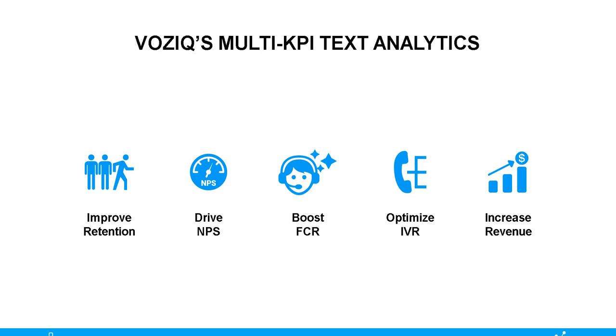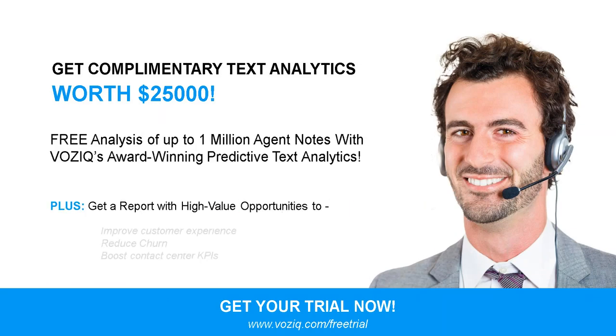It can also help improve first call resolution rates and reduce repeat calls, which cuts cost. Because this data can be delivered immediately to IVRs, you can optimize IVRs and reduce cost further. And the opposite of reducing churn — you can twist this into predicting likely sales and improve sales rates too. Whatever your problem — customer retention, customer experience, cost reduction, or revenue improvement — the same idea can work. Think of your call center as a data source and text analytics as the way to mine it.